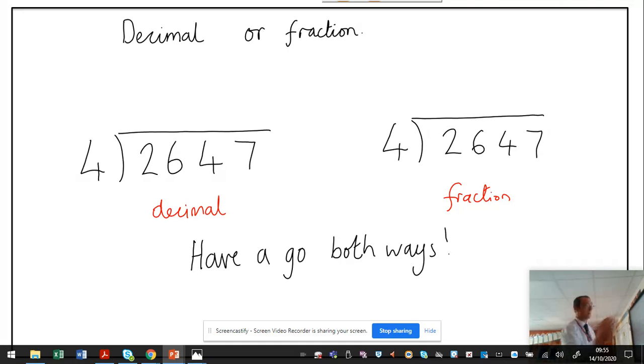I'm going to do both questions at the same stage. So the first part of it, 4 into 2, doesn't go, and that is exactly the same for both. 4 into 26 goes 6 with 2 left over, goes 6 with 2 left over. 4 into 24 goes 6.